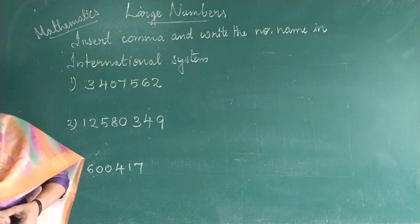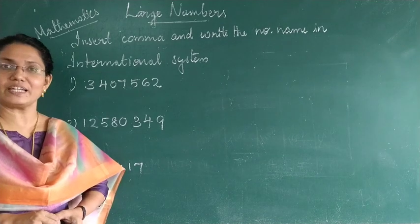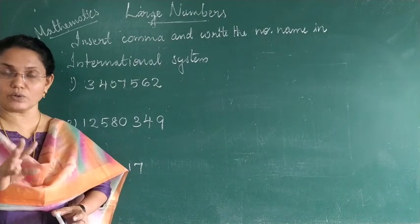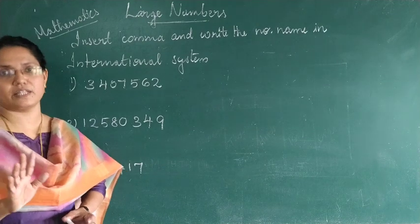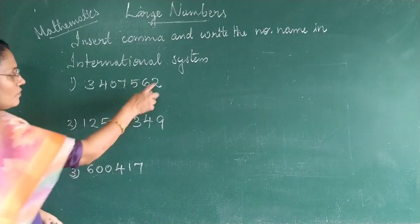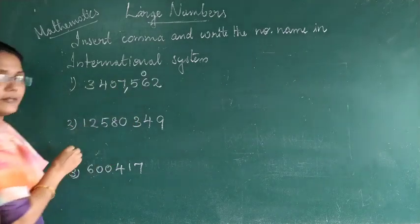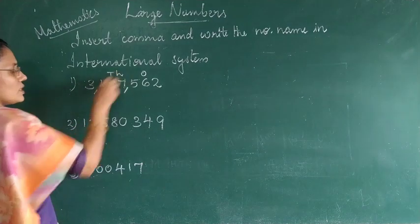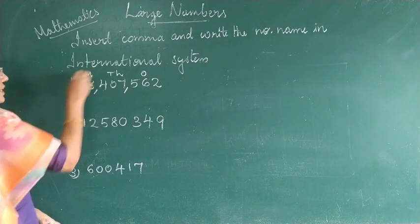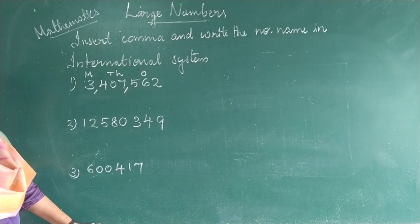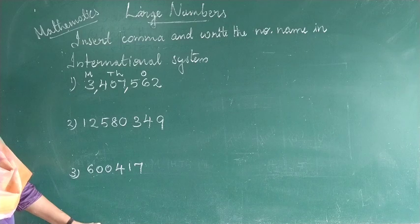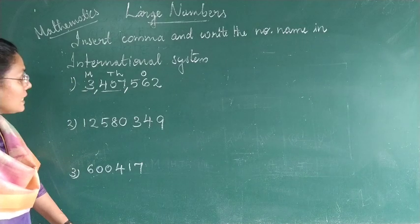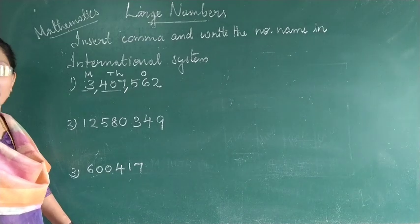Now we can insert commas and write the number name in the international system. When inserting commas, always start from right to left. Count three digits and insert a comma, then write its period name. For the first question, count 3 from the right — that is the ones period — then insert comma, count the next 3 — that is the thousands period — then the remaining digits are the millions period. The number is 3,407,562.